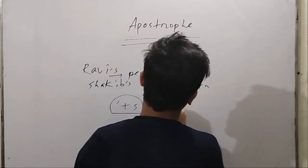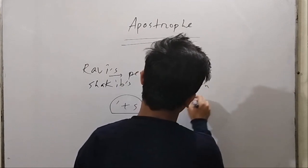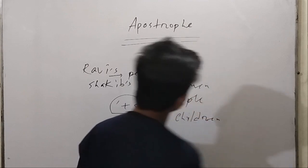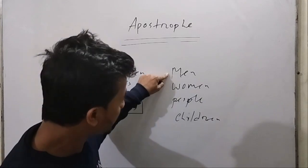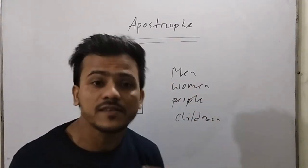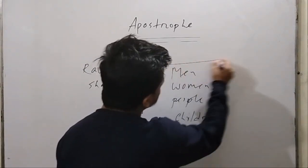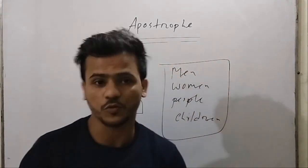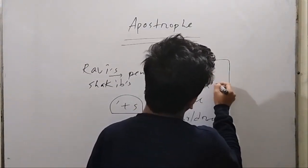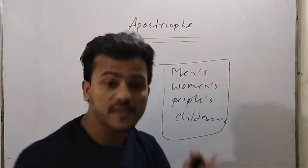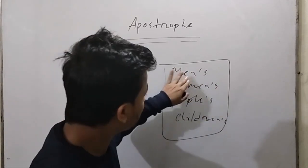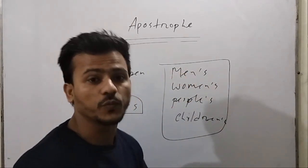What about other nouns which don't add S? I mean irregular nouns. Look here — men, women, people, children. They are plural but irregular, they don't end in S. So for these, we use apostrophe with S: men's house, children's school, women's house. That means plural without S takes apostrophe with S.